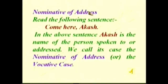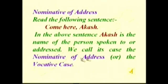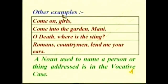Nominative of address — also called the vocative case. Read the sentence: 'Come here, Akash.' Akash is the name of the person spoken to or addressed. Other examples: 'Come into the garden, Maud'; 'Oh death, where is thy sting?' — here 'death' is addressed; 'Romans, countrymen, lend me your ears' — here Romans and countrymen are addressed.